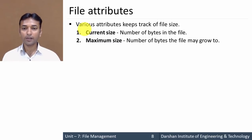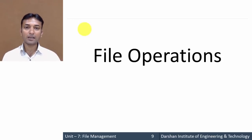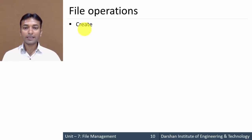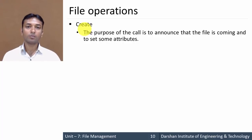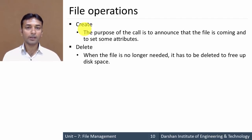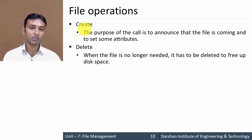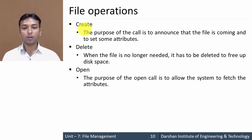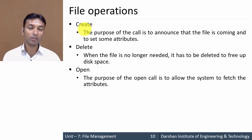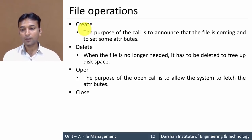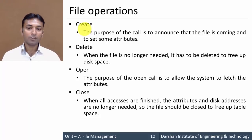Now moving to file operations — the different operations that can be performed on a file. The first operation is create, performed whenever we are creating a new file. The second is delete, performed when a file is no longer needed in order to free up disk space. The third is open, whose purpose is to allow the system to fetch the attributes or to open the file to perform some operation on it.